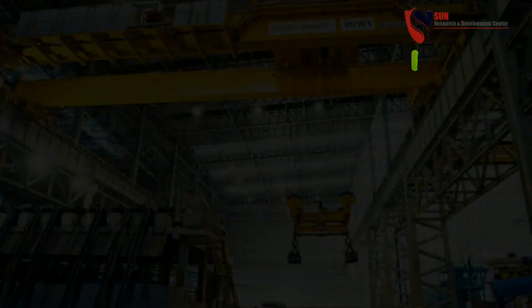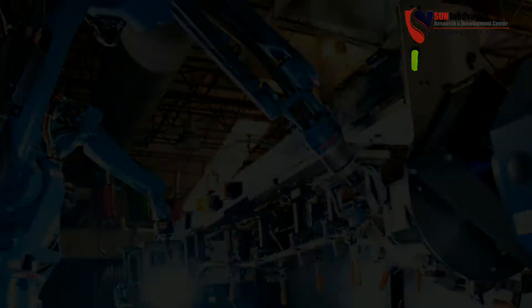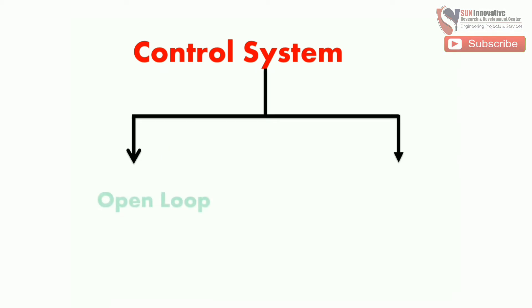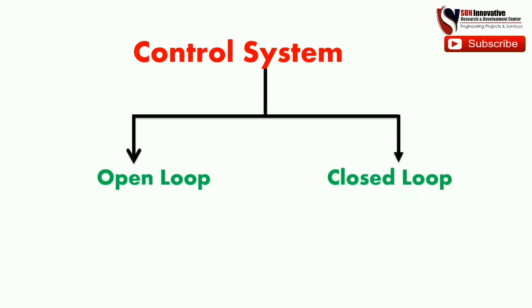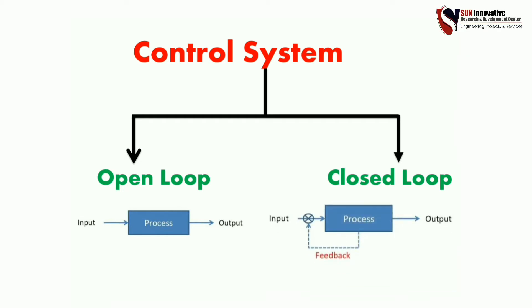Let's start understanding how a control system works. The control system is divided into two groups: first is open loop and second is closed loop. In open loop, the block represents the working flow from input to output through the process. In closed loop, feedback is taken from the process for improving the output.